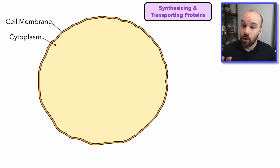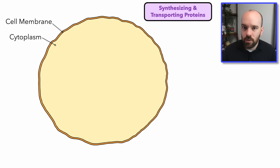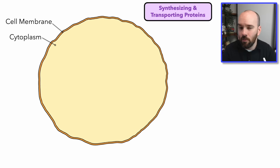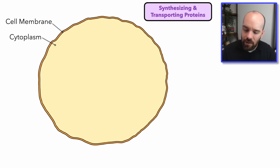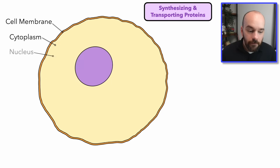The next organelles we look at are specifically involved in the process of synthesizing or making proteins. Synthesis means that you take multiple things and put them together in some new form. We take amino acids and put them together to form a new protein. So let's take a look at some organelles involved in this process.